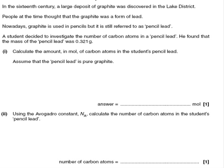In this question about carbon, you're asked to calculate both the amount, that is the number of moles, and also you're asked to calculate the number of atoms. What information are you given? Well, if you read through the question, you find that it gives you the number 0.321 grams, and this obviously is a mass.